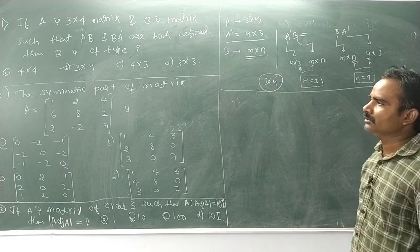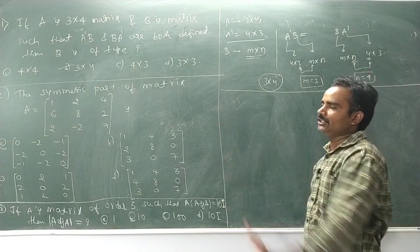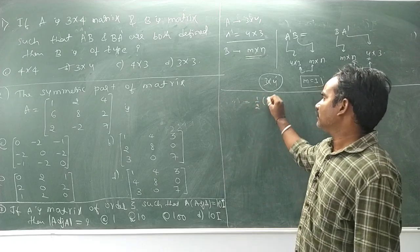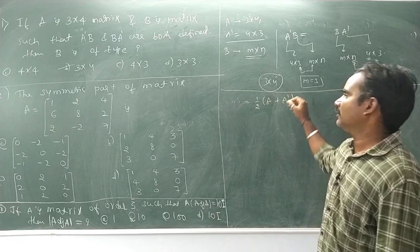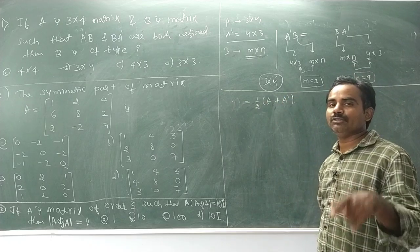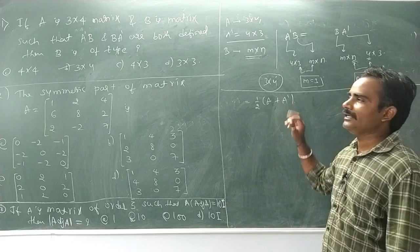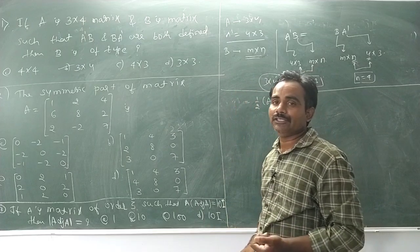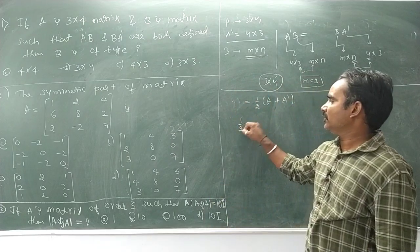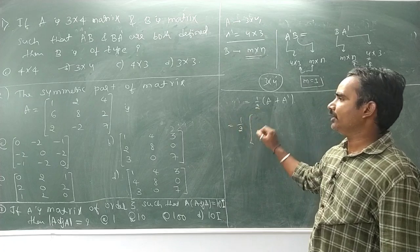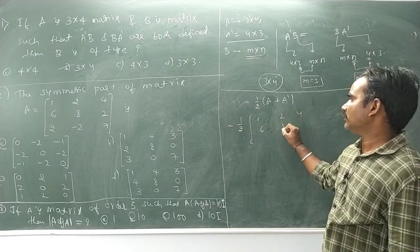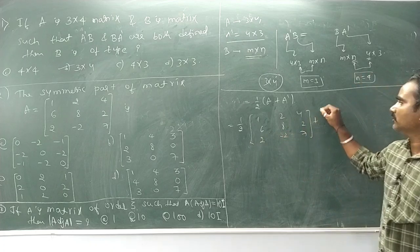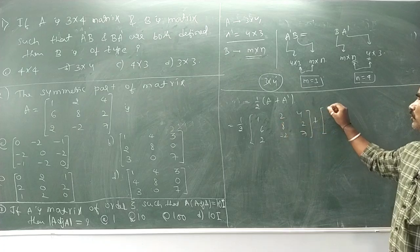Next problem: the symmetric part of matrix A. Symmetric part equals one-half times (A plus A transpose). The skew-symmetric part equals one-half times (A minus A transpose). When you take transpose of A, rows become columns and columns become rows.